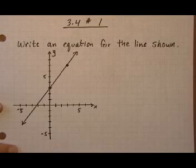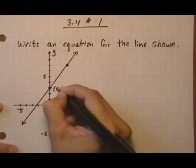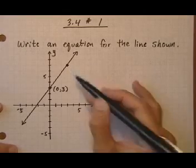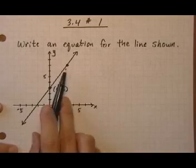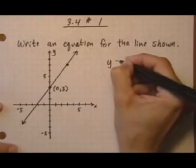3.4 number one: write an equation for the line shown. So here we have a line going through the point (0,3) and it goes through another point up here. It's nice that we have two distinct points because that's going to let us find a slope.